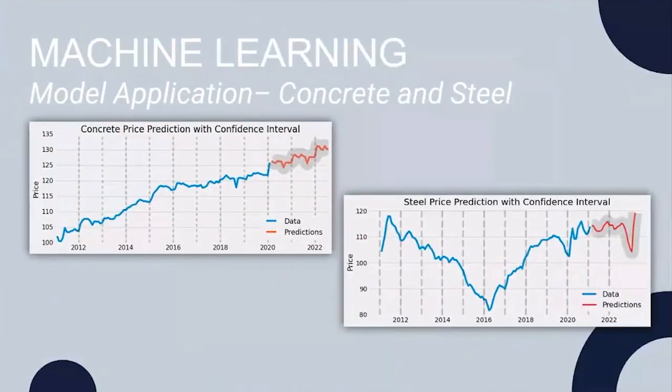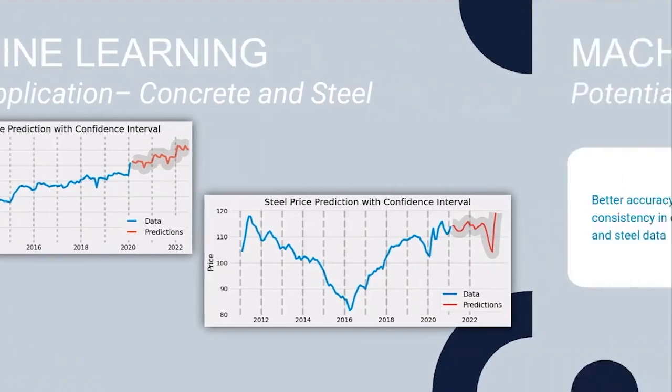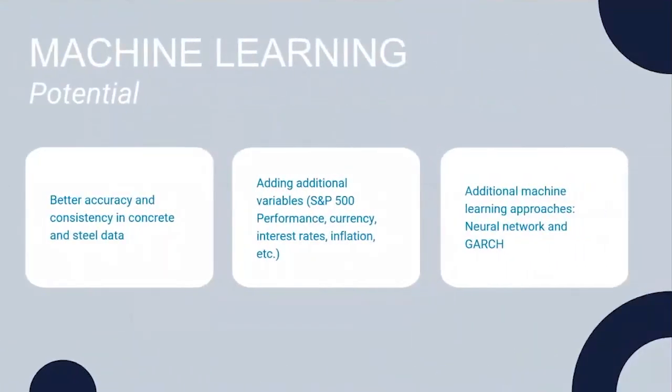We then applied the aforementioned process to concrete and steel data. However, please note that due to time constraints, we were not able to find the best data set as well as optimize the parameters used in the models. The potential of this model is unlimited, but we have to make sure the issue of data is solved before going to the next step, as well as implementing future data like S&P 500, inflation, and interest rates. Other machine learning techniques like neural networks could be implemented in the future.